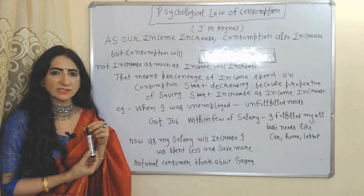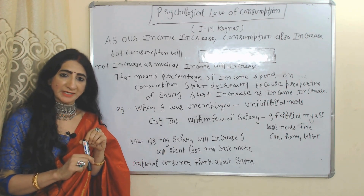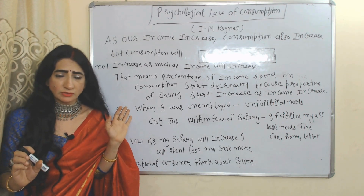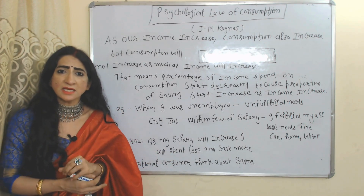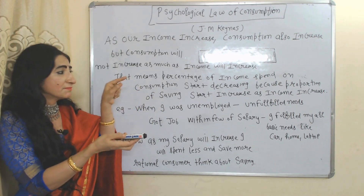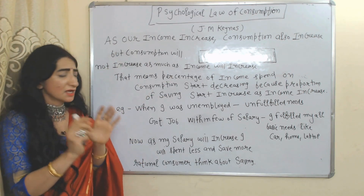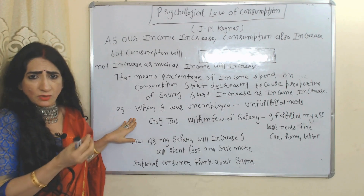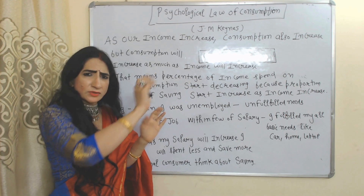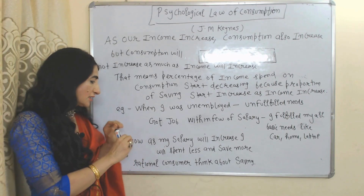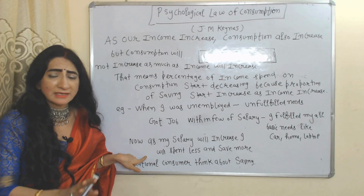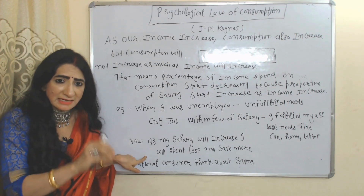Now we will see the psychological law of consumption, given by J.M. Keynes. According to this law, as income increases, consumption will also increase, but consumption will not increase as much as income increases. As income increases, the percentage of income spent on consumption starts decreasing, because the percentage of savings starts increasing. For example, when I was unemployed I had many unfulfilled needs, but after a few years of salary I fulfilled almost all my basic needs — I purchased a car, home, and laptop.